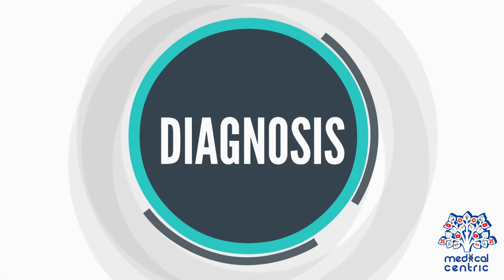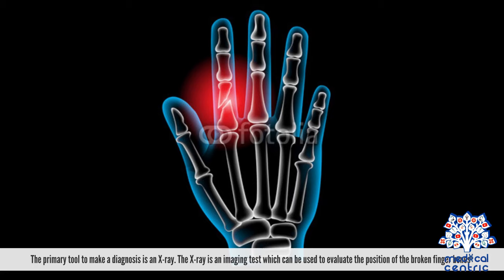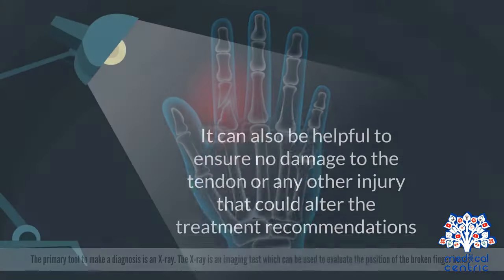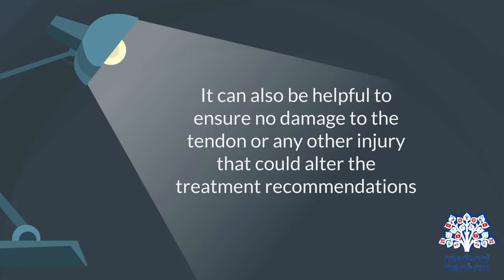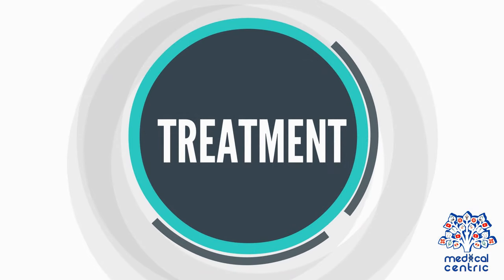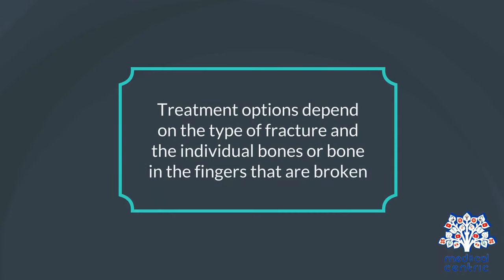Diagnosis and treatment. The primary tool to make a diagnosis is an x-ray, which is an imaging test used to evaluate the position of the broken finger bones. It can also be helpful to ensure no damage to the tendon or any other injury that could alter the treatment recommendations. Treatment options depend on the type of fracture and the individual bones in the fingers that are broken.